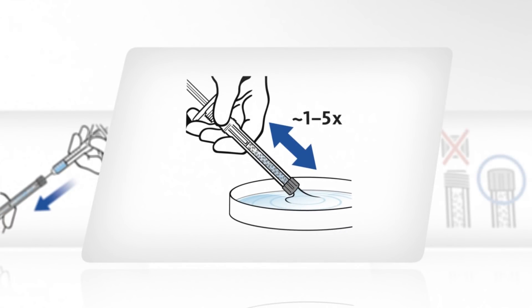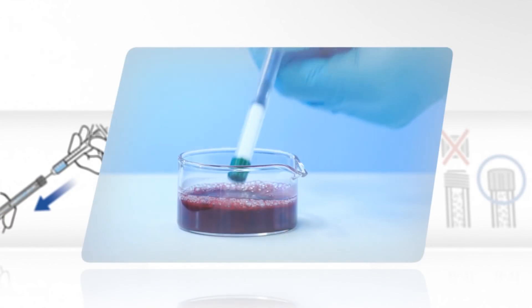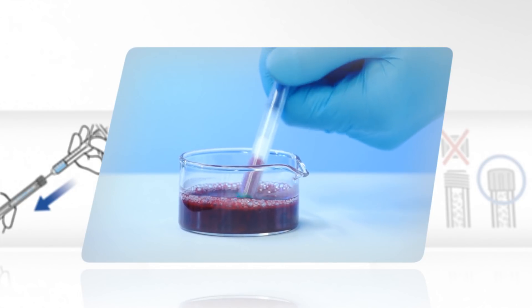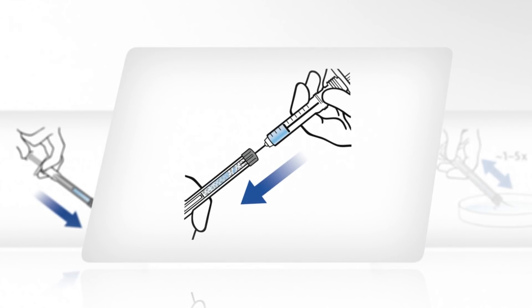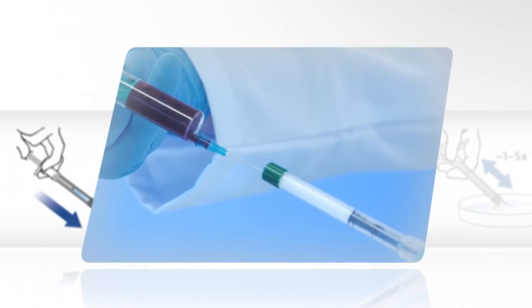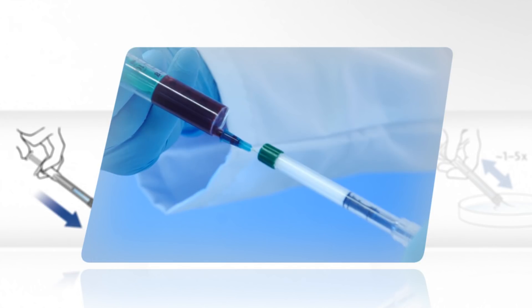Draw up either sterile physiological saline solution or patient blood. Alternatively, use a separate syringe to moisten the Geistlich BioAos.